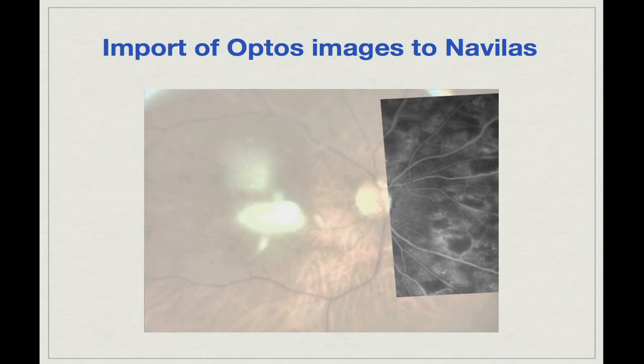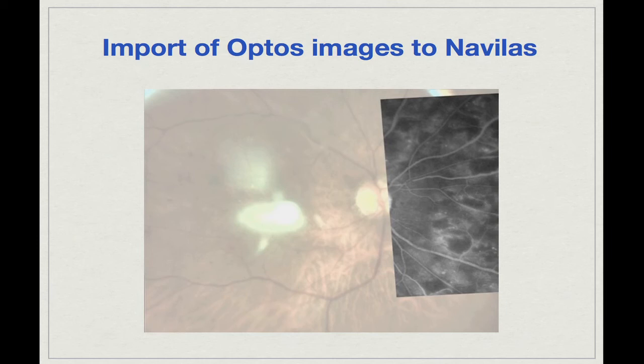We can plan this targeted retinal photocoagulation using images from wide-angle imaging systems — import them, crop them, create treatment plans, and incorporate them into the photocoagulator to perform treatment. This is a wonderful technology for very selective targeted retinal photocoagulation. This new approach, navigated TRP, needs to have its clinical efficacy assessed, but it is a promising approach to selective treatment.